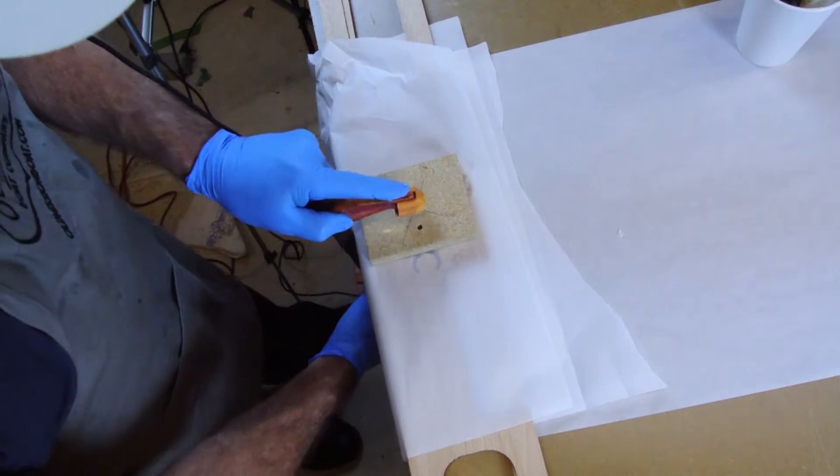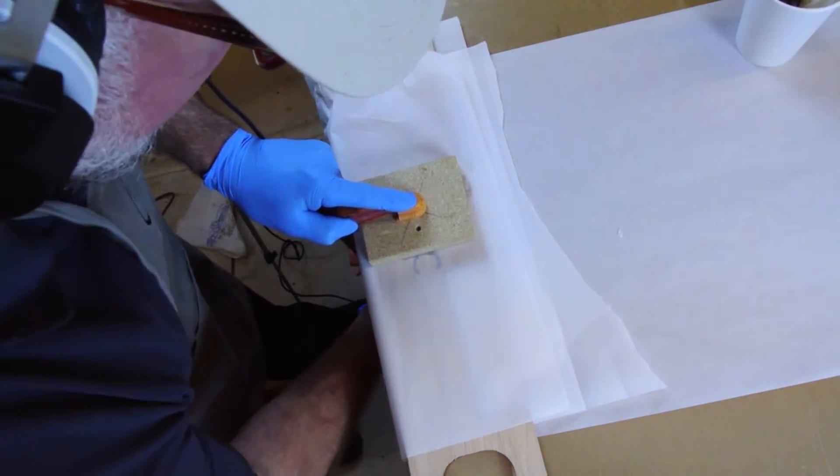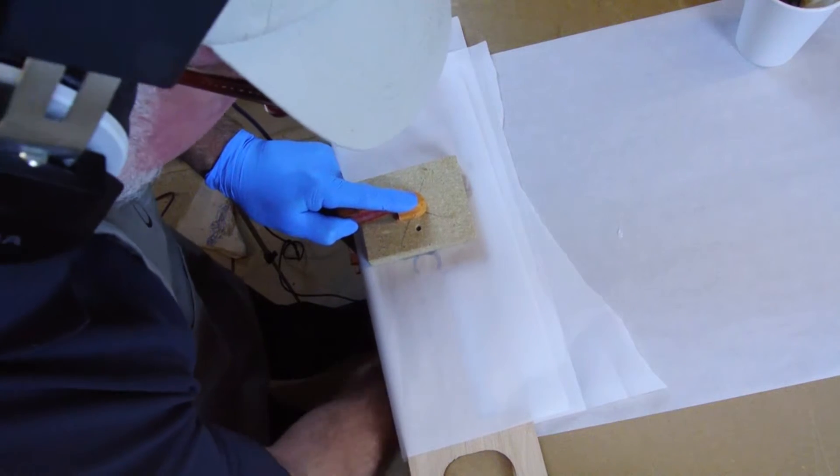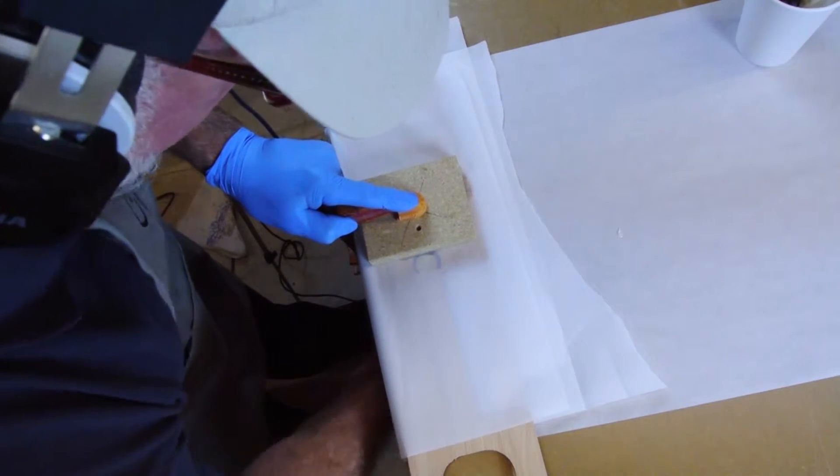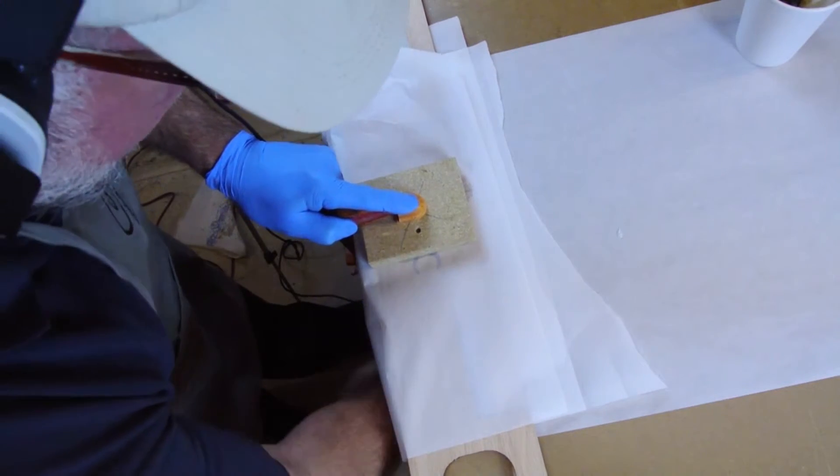Place a clamping block large enough to cover the entire scarf area directly onto the scarf joints and clamp the assembly down to the bench using a bar clamp or a C clamp. Allow the joints to cure for at least eight hours before removing the clamps.